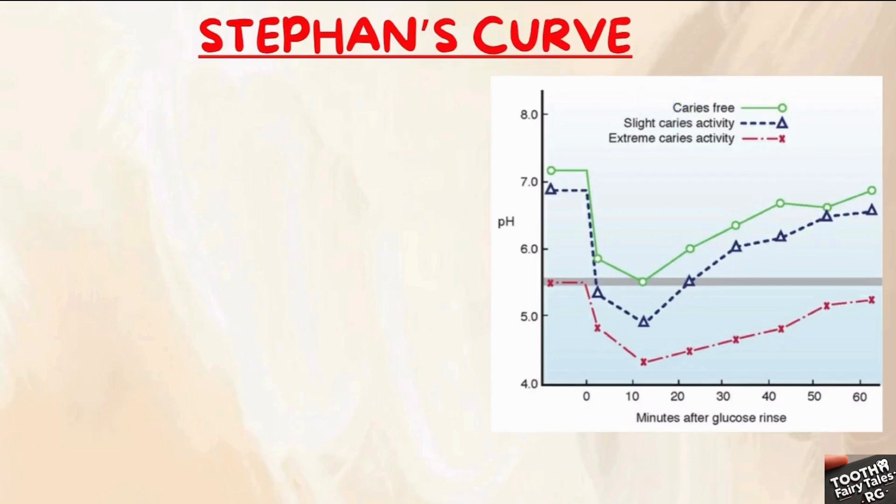Now let us consider a patient with some early signs of caries. After a glucose rinse, the pH drops below 5.5. The patient who is having slight caries activity, indicated in the blue mark, after giving the glucose rinse, the pH is falling below 5.5 but not by much and not for too long.